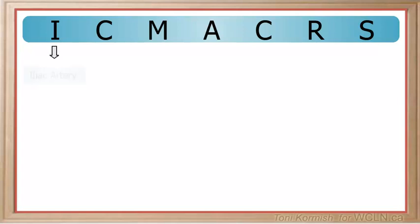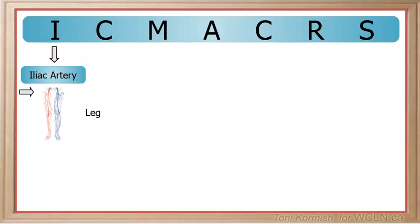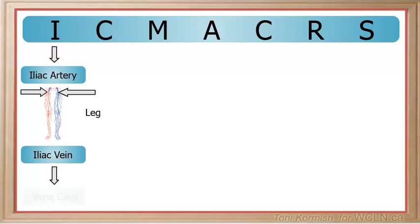I stands for the iliac artery, which transports freshly oxygenated blood from the aorta to the legs. The corresponding vein is the iliac vein, which transports deoxygenated blood back to the vena cava to the right atrium.